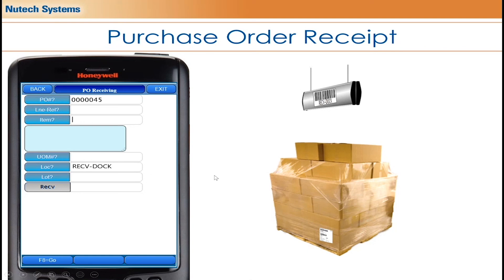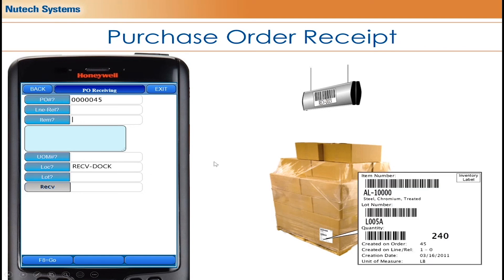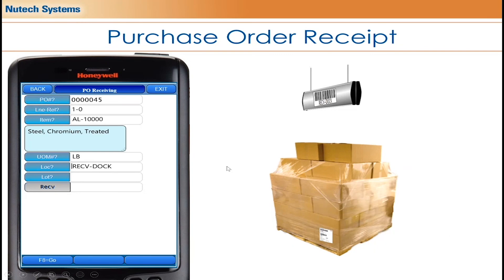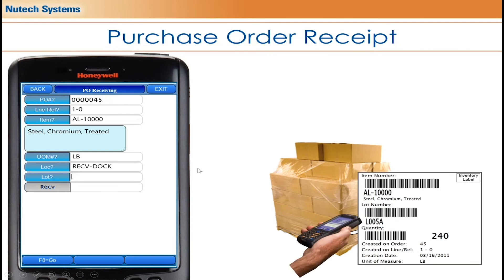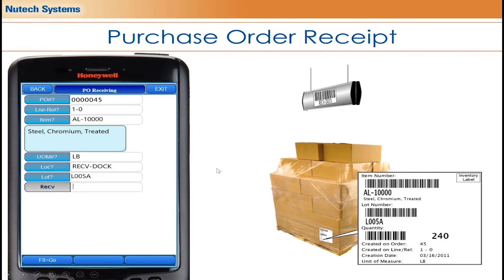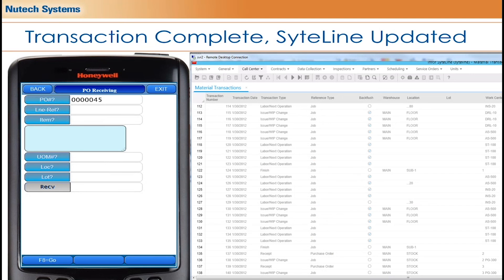In this case we've defaulted it to our receiving dock, so we'll continue through the transaction that way. Once we've scanned the purchase order number, we then scan the item number. It will display a description of the item and the unit of measure. The location is already defaulted. We scan the lot number if the item is lot-controlled; if it's not, that field is automatically hidden. In this example we will scan the lot number, then scan or type in the quantity being received.